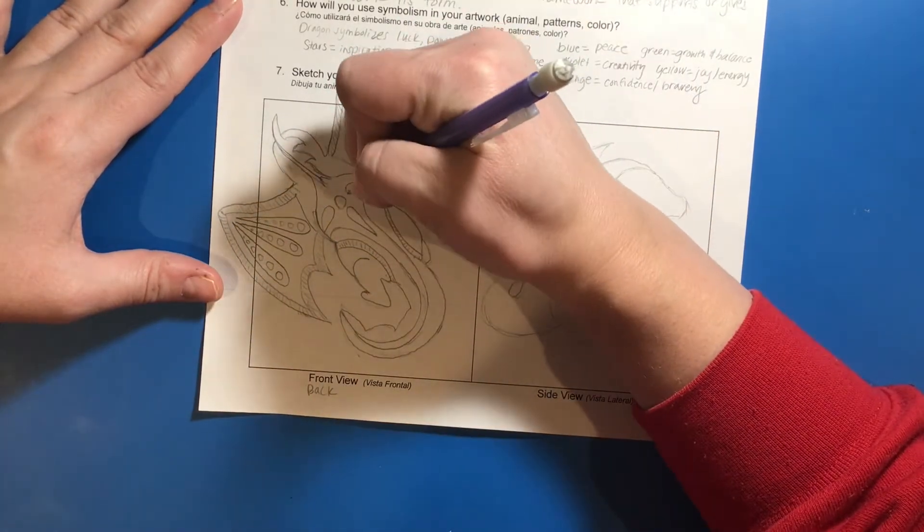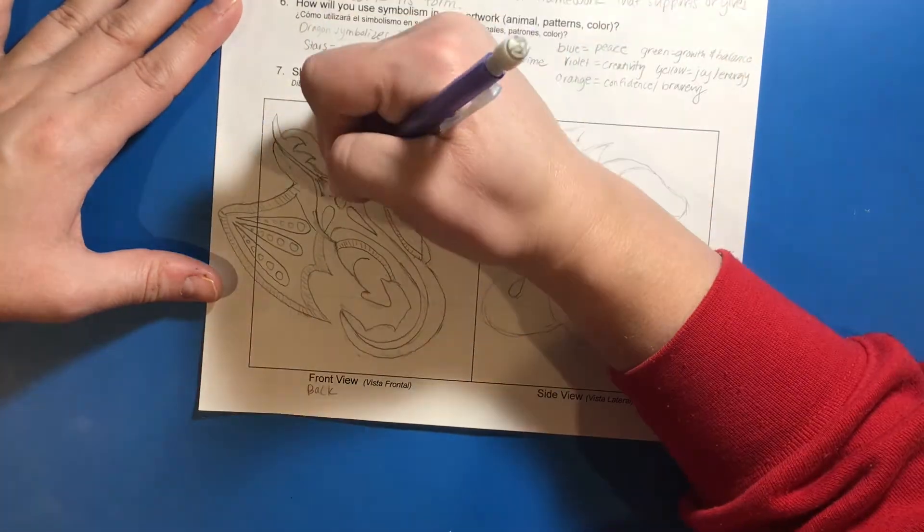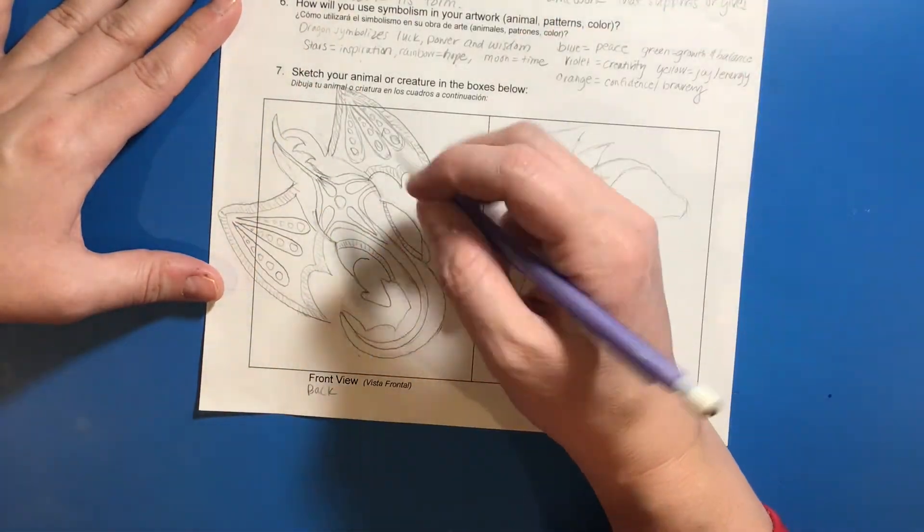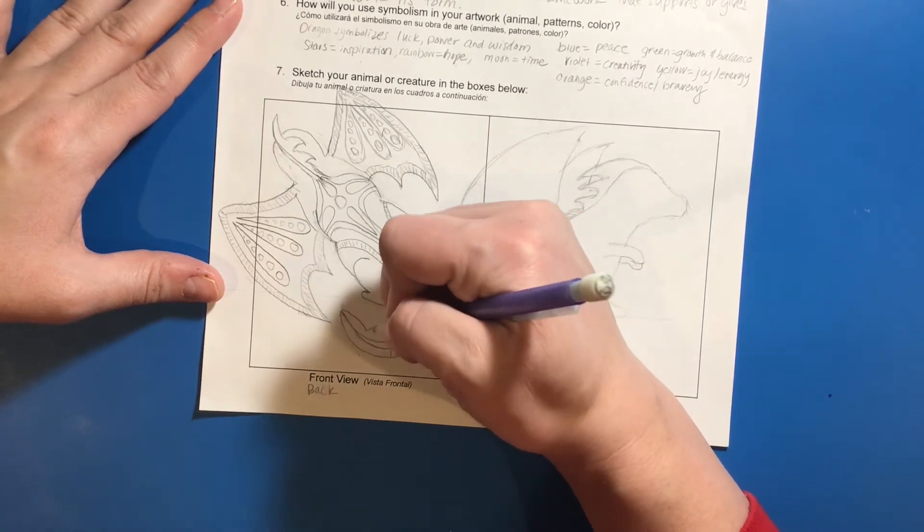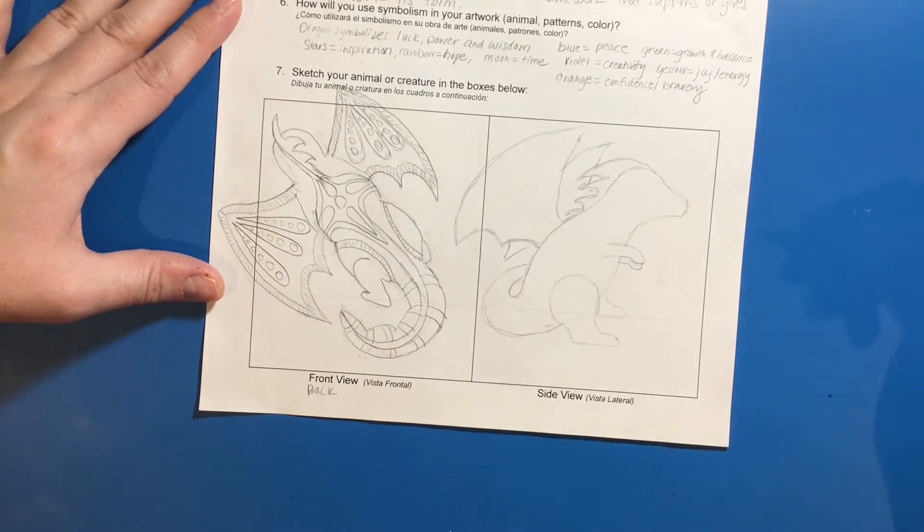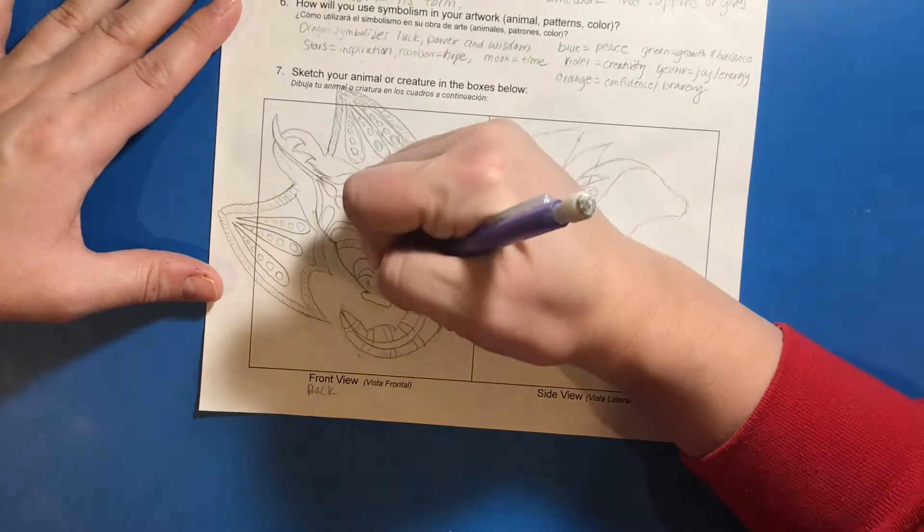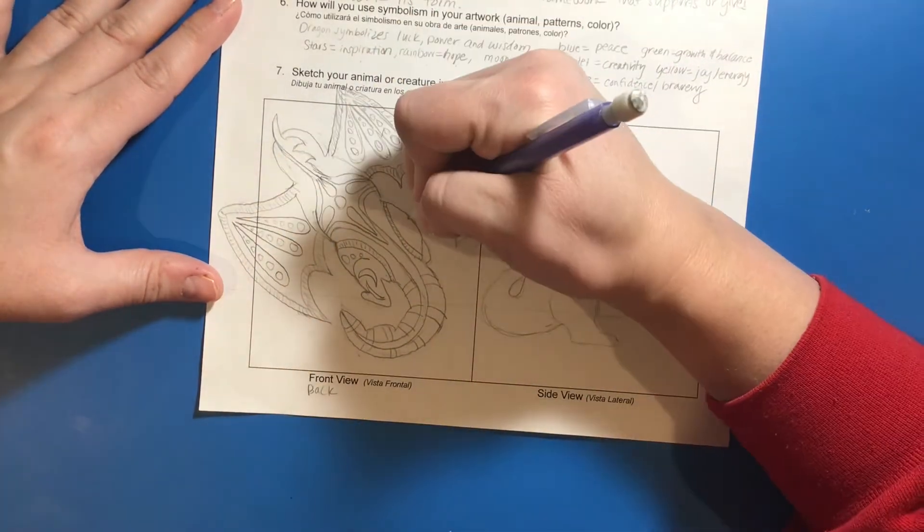One of the things that you can also consider is the shape of your form or the contours of your form. So I took inspiration from the actual shape of the dragon. So from the wings, you can see I created a border around the outside edges. And then from one of the points, I created kind of the teardrop shapes.